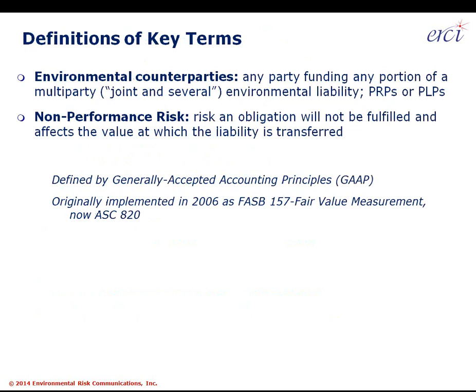In terms of key terms, there are just two. Environmental counterparties are any party funding any portion of a multi-party environmental liability — typically focusing on an environmental remediation site that has one or more PRPs, potentially responsible parties. In Washington State they're also referred to as PLPs, potentially liable parties, but the term is basically the same. It's not meant to be a strict CERCLA definition; it applies to any cleanup with more than one party.